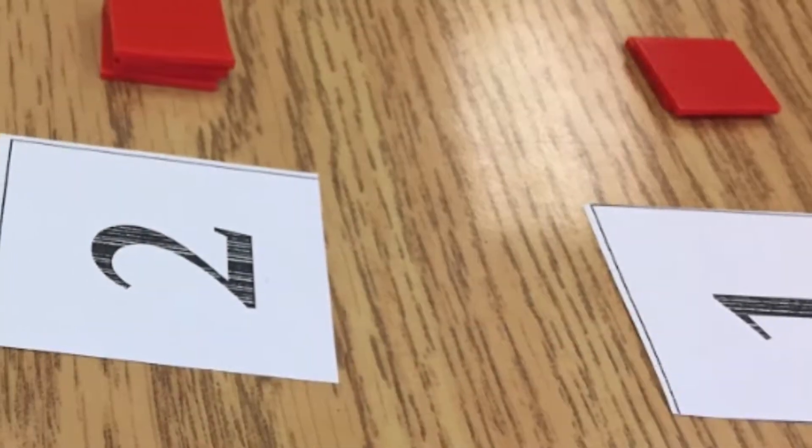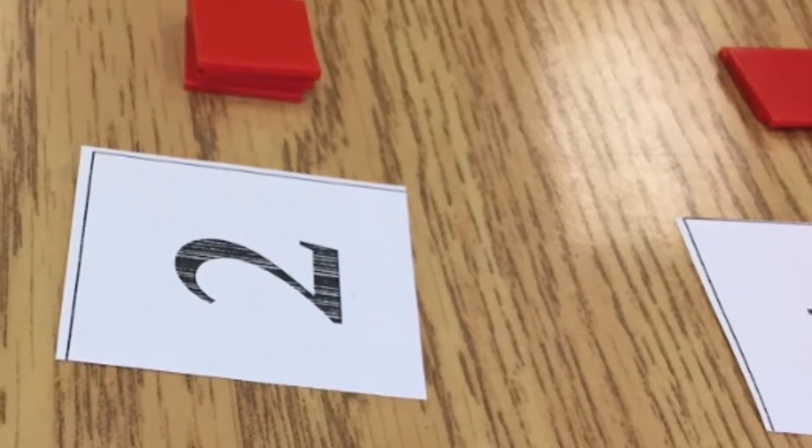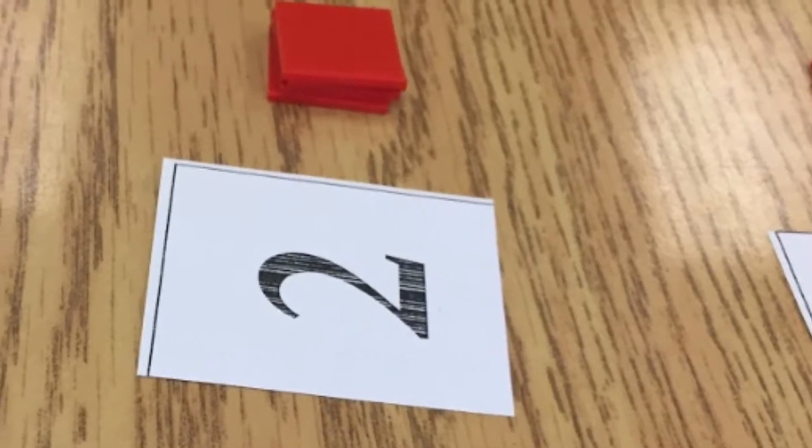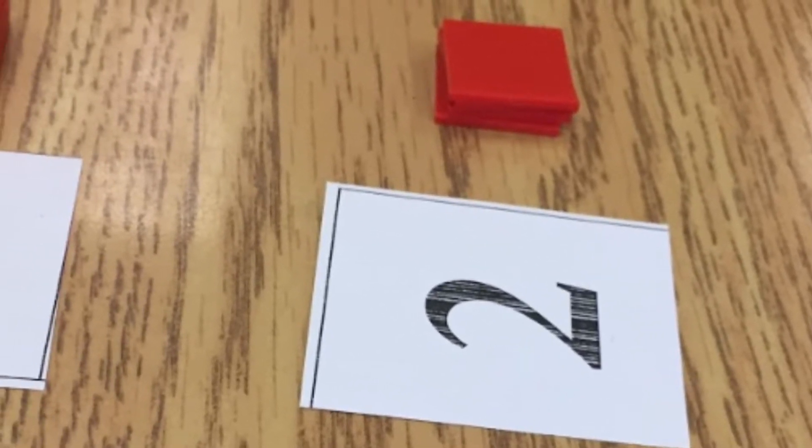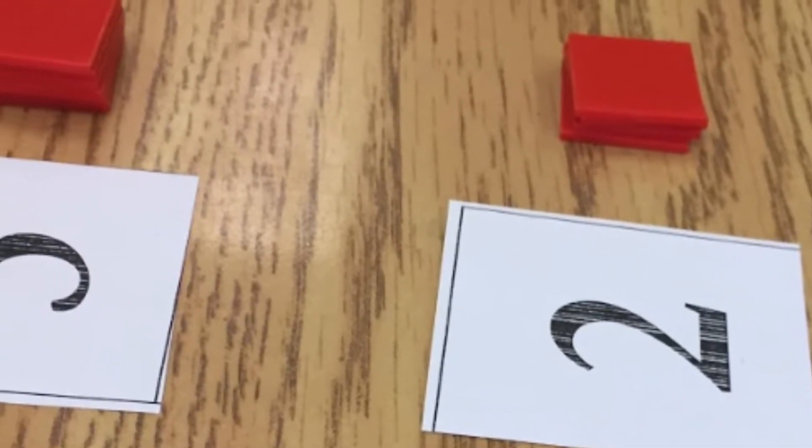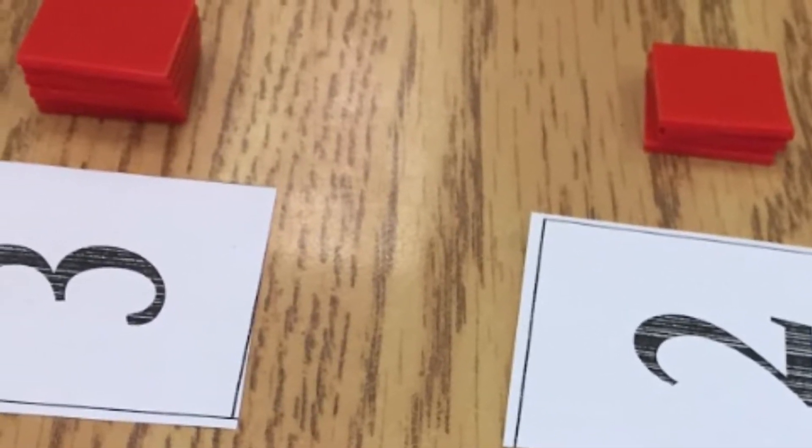Students were then given a pattern rule and asked to build it. So here we see at position one it is the position number times two to give us the number of tiles. At position number two, times two gives us four tiles. Position number three times two gives us a stack of six tiles.